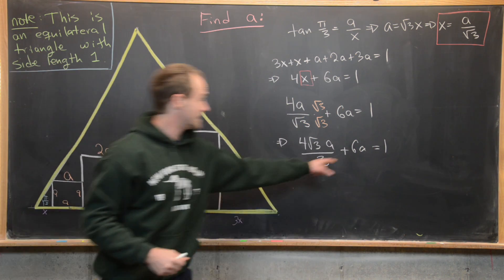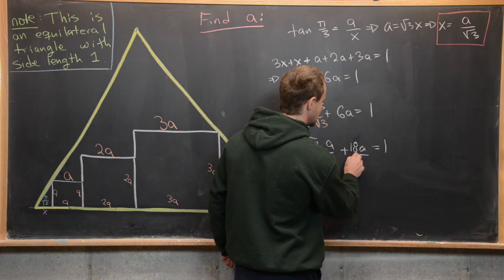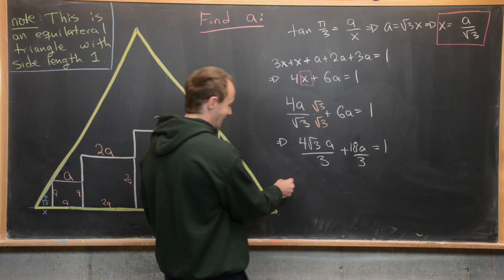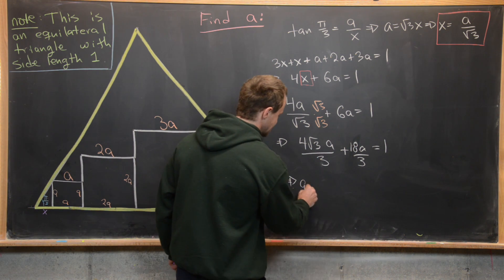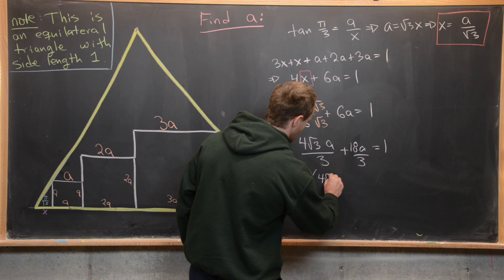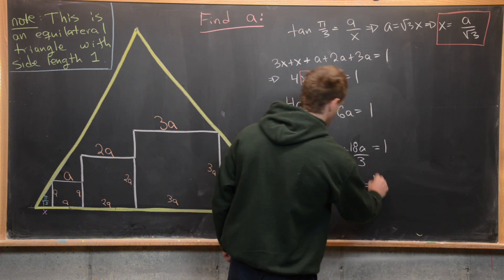So let's maybe give this a common denominator of 3, so we can rewrite 6 as 18 over 3. Then next we can factor an a out of the left hand side that's going to give us a times the quantity 4 root 3 plus 18 over 3 equals 1.